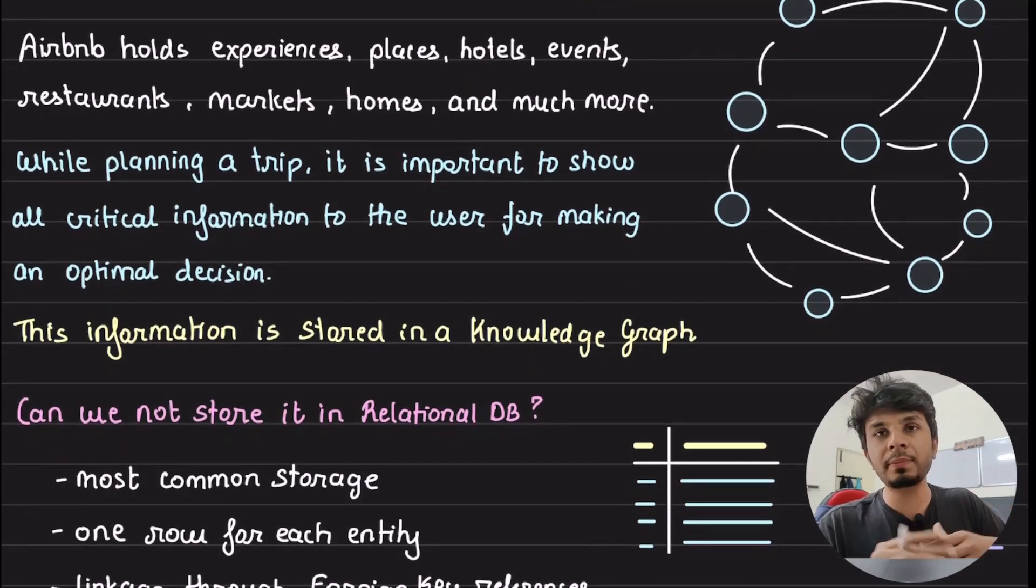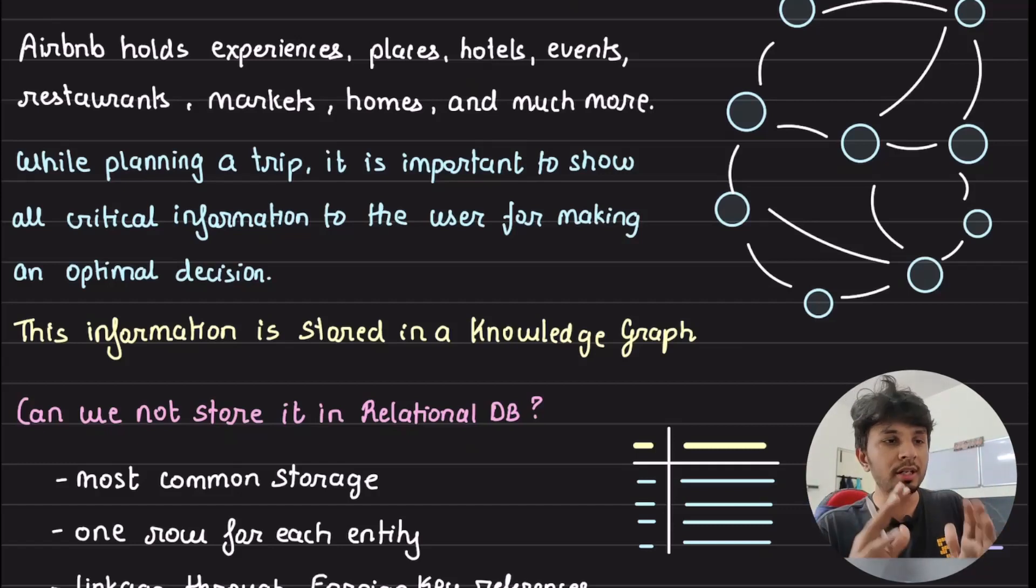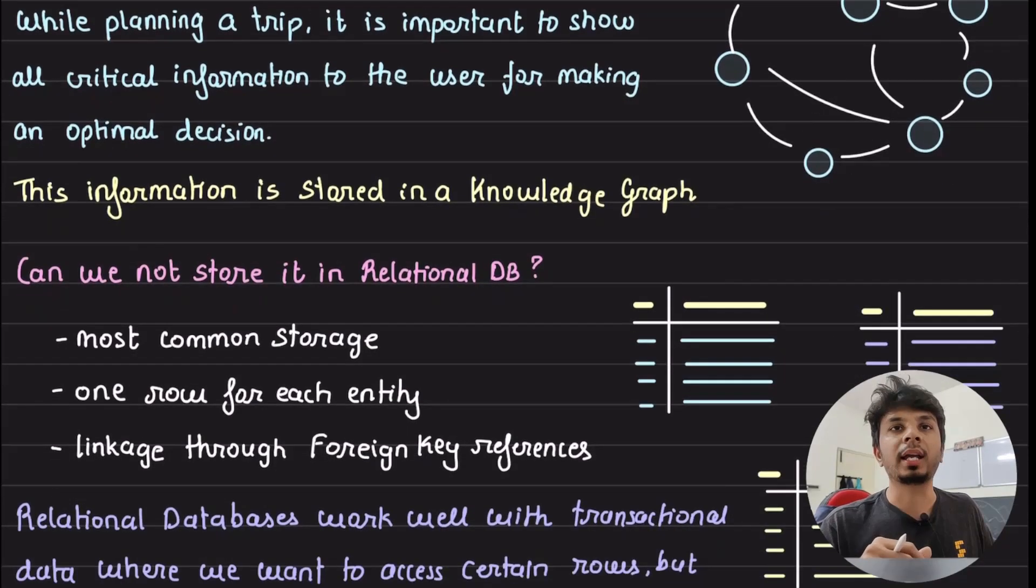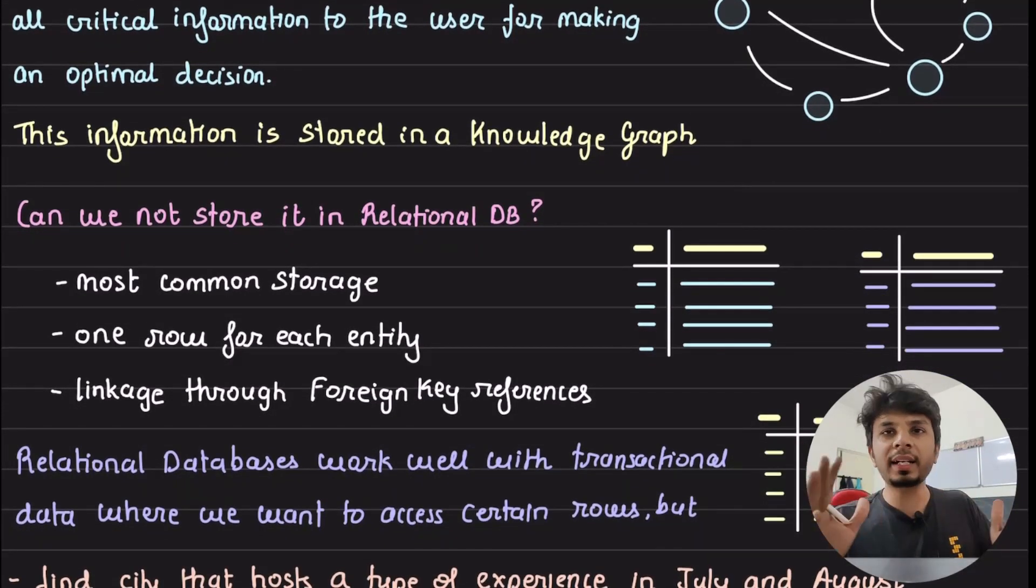This is where knowledge graphs come in. It is not a new thing. Google has been using it for a very long time, Facebook also has their own knowledge graph and whatnot. So here we would take a look at how Airbnb does that.